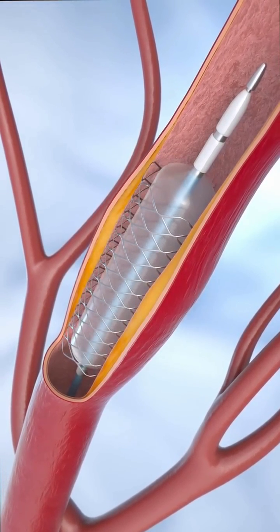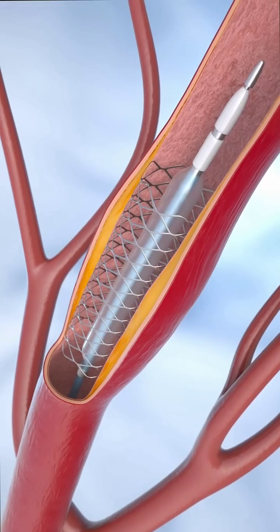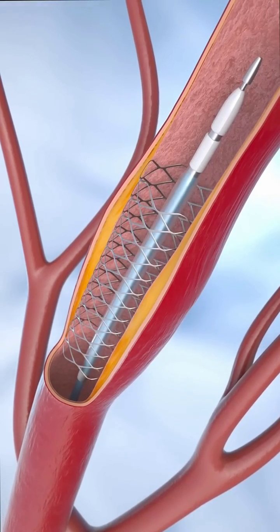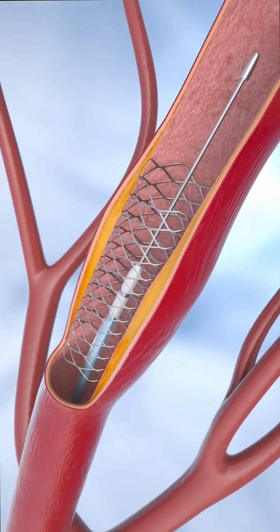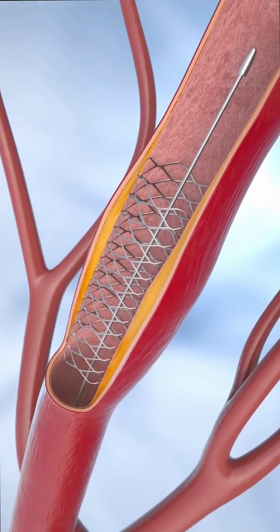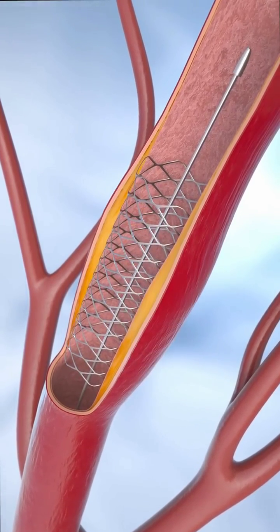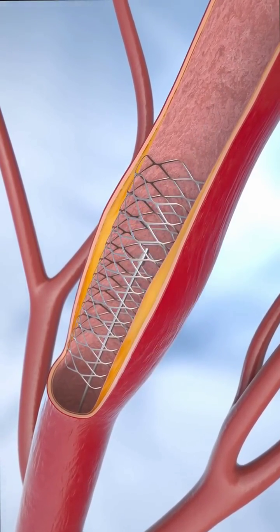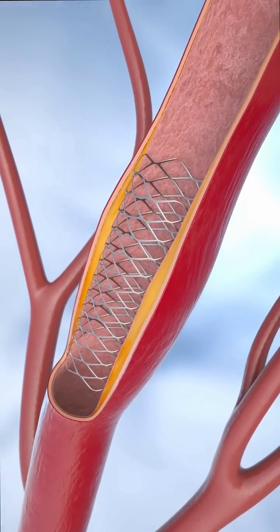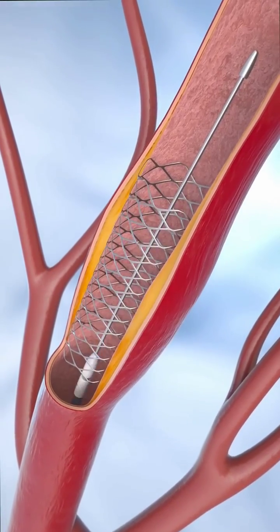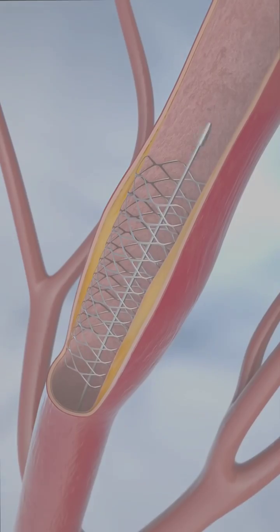Angioplasty and stent placement may be a planned procedure to improve blood flow to the heart muscles. The procedure also may be used as emergency treatment for a heart attack.